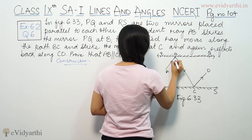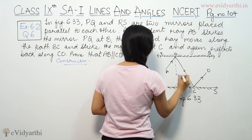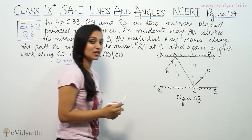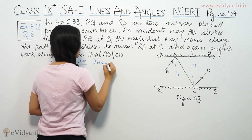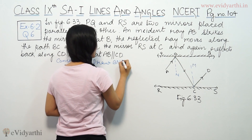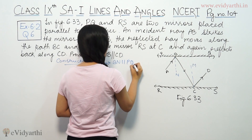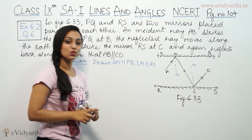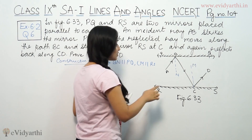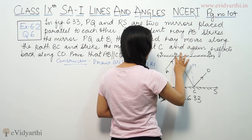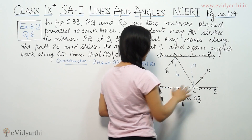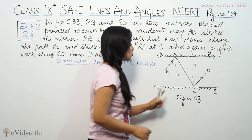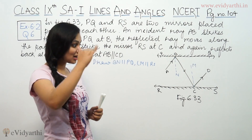Construction: draw a perpendicular here. Let's say this is BN and this is CM. So draw BN perpendicular to PQ and CM perpendicular to RL. Now these two lines are parallel because the mirrors are parallel. So BN is parallel to CM.